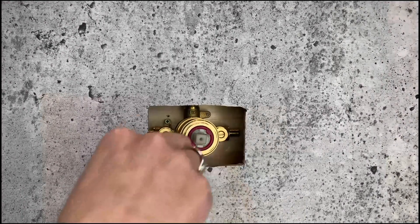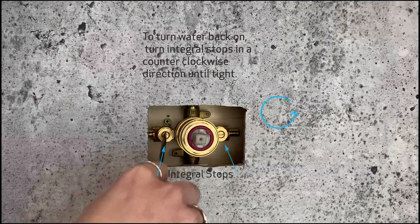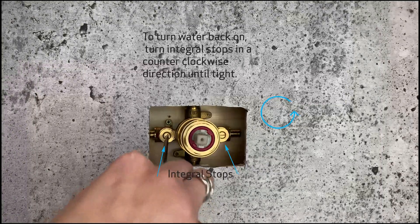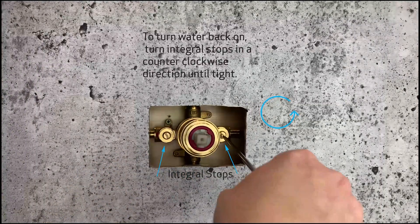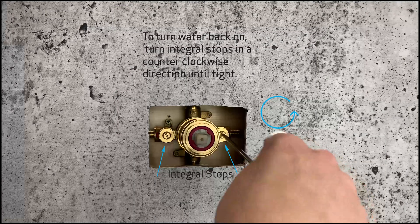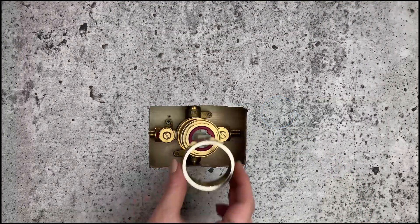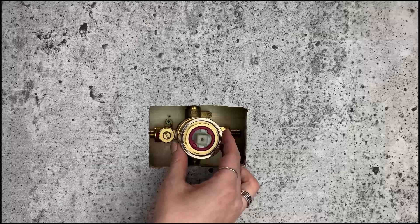You can now turn the water to the valve back on by turning the integral stops in a counter-clockwise direction until they are both wide open and won't turn any further. Replace the decorative collar and then replace the decorative ring.